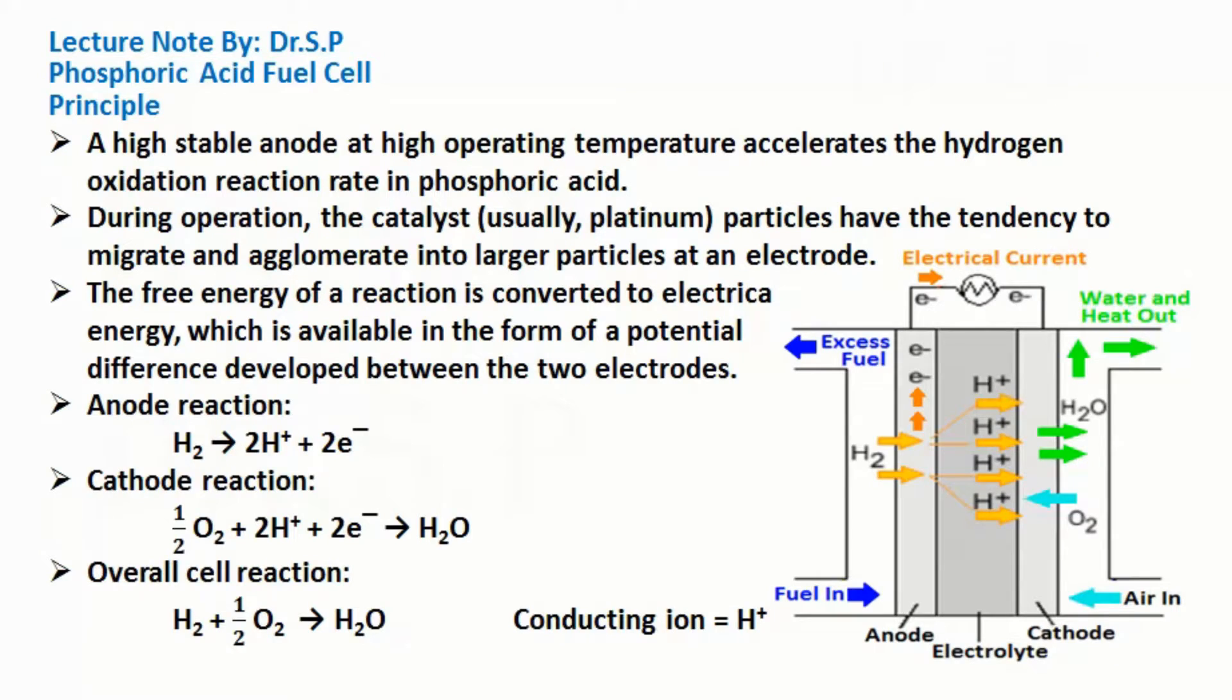Now, the principle of the Phosphoric Acid Fuel Cell. A high stable anode at high operating temperature accelerates the hydrogen oxidation reaction rate in phosphoric acid. During operation, the catalyst particles have the tendency to migrate and agglomerate into larger particles at an electrode.